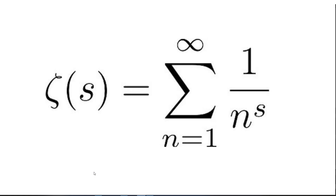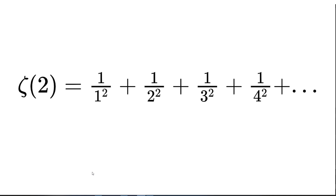The zeta function is the summation of the reciprocal of the natural numbers raised to some complex exponent s. For example, if our input was s equals 2, the function would be the summation of 1 over 1 squared plus 1 over 2 squared plus 1 over 3 squared, and so on, all the way to infinity.